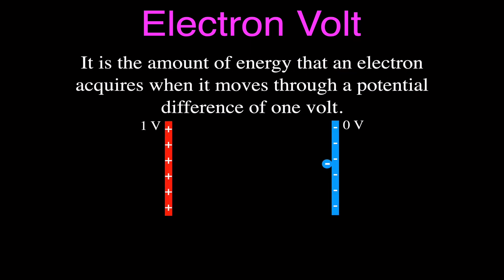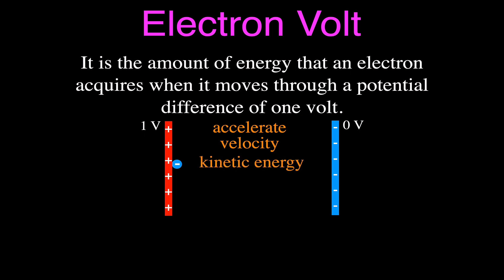An electron volt is the amount of energy that an electron acquires when it moves through a potential difference of 1 volt. Here we have a negatively charged electron held at a negatively charged plate. It's going to want to move over to the positively charged plate, and the potential difference between those plates is 1 volt. As the electron moves through that potential difference it accelerates, increasing its velocity and gaining kinetic energy equal to 1 electron volt. We can also calculate that energy in joules using the work equation, and the answer will come out in joules.